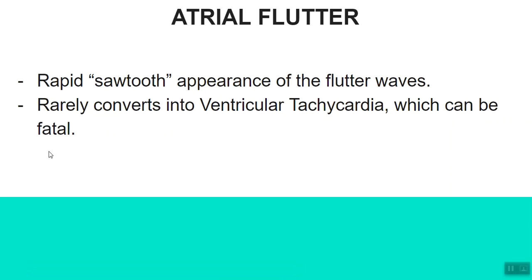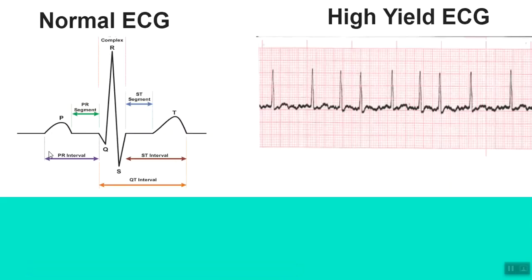This is our next high-yield ECG. Let's suppose a 50-year-old woman with long-standing hyperthyroidism comes to the emergency department with palpitations, and her pulse is irregularly irregular. On her ECG you get a very irregular pattern like this.